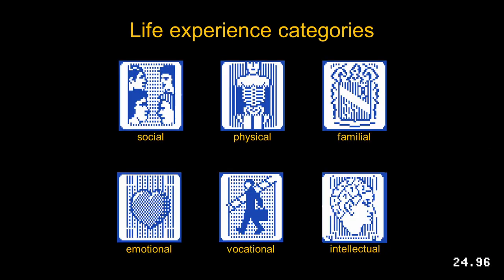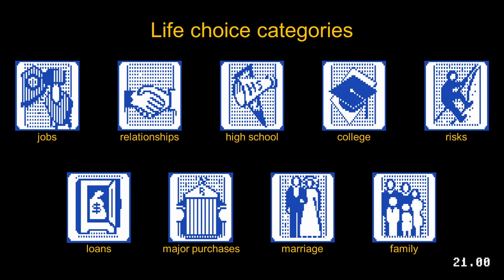Experiences are the arbitrary things that happen in life, and each can be selected only once. In contrast, life choices can be selected many times. Your character attributes will influence which experiences and choices are available and their possible outcomes.